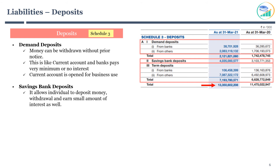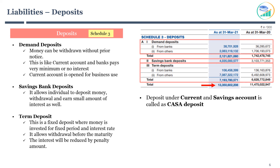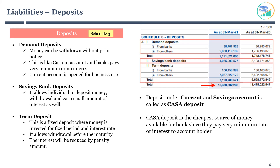The next line item is term deposits, which is a fixed deposit where money is invested for a fixed period at a fixed interest rate. Withdrawal before maturity is allowed; however, the interest will be reduced by a penalty amount. Deposits under current and savings accounts are called CASA deposits. CASA deposits are the cheapest source of money for a bank since the bank pays very minimal or no interest. Growing CASA deposits is always a good sign, as banks can get capital at very low interest and lend it to borrowers at higher interest, resulting in higher net interest margin and overall profit.